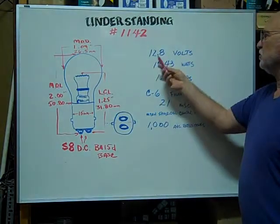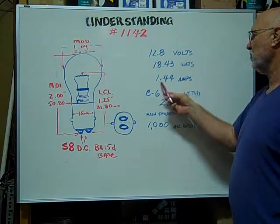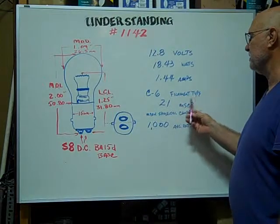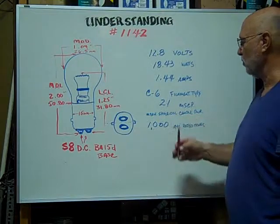The volts are rated at 12.8. The watts are 18.43. Amps are 1.44. Filament type is C-6. The mean spherical candle power is 21.